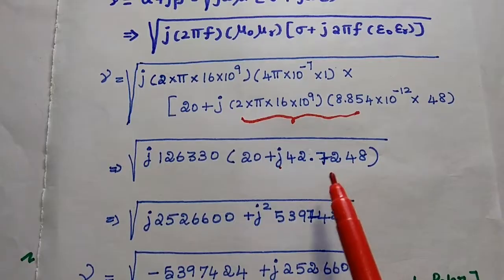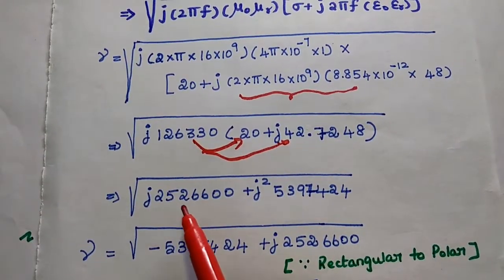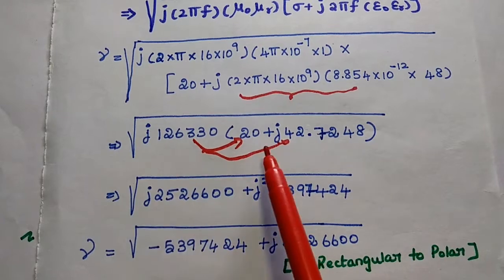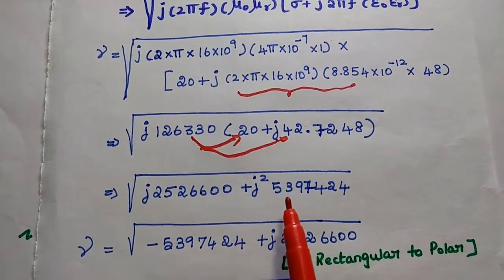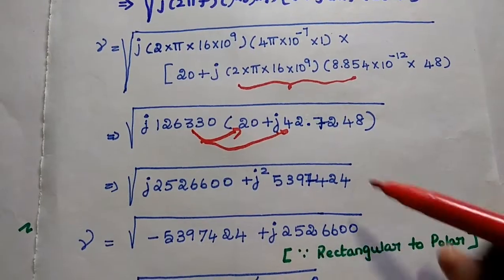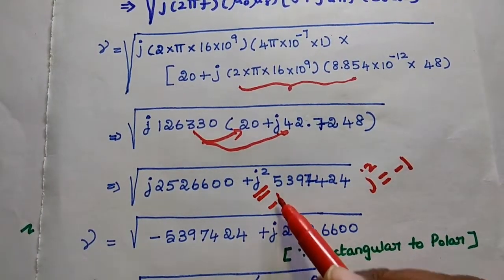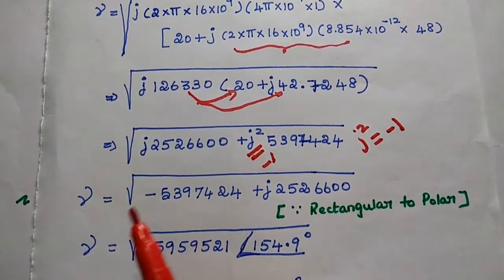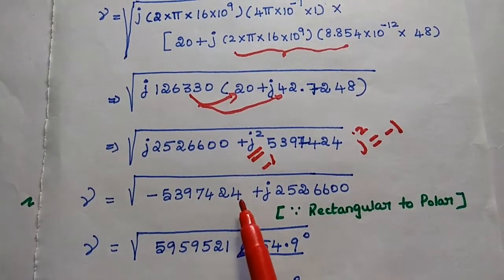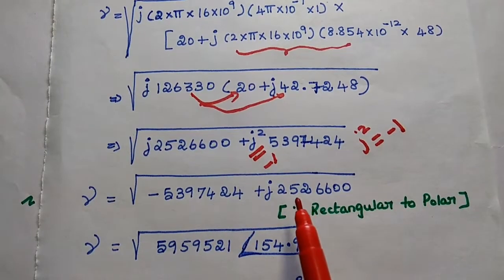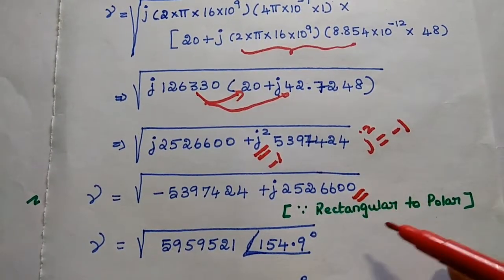For further simplification, multiplying the term inside the bracket gives j252600. Here we get j into j, that is j squared. Multiplying this term gives 5397424. As we know, j squared is equal to minus 1, so we can write this as minus. Therefore, gamma is equal to the square root of minus 5397424 plus the imaginary term j25266000. This is in complex rectangular form.